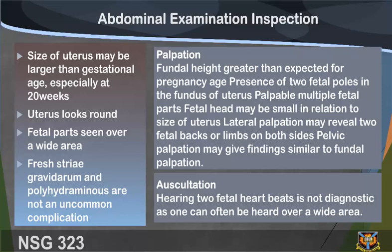Striae gravidarum and polyhydramnios are not uncommon complications. On palpation, the fundal height is greater than expected for pregnancy age, with presence of two fetal poles in the fundus of the uterus, palpable multiple fetal parts, and the fetal head may be small in relation to the size of the uterus. Lateral palpation may reveal two fetal backs or limbs on both sides. Pelvic palpation may give findings similar to fundal palpation. Auscultation: hearing two fetal heartbeats is not diagnostic, as one can often be heard over a wide area.